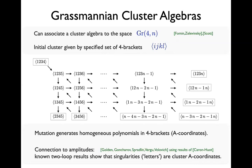It's non-trivial that they're polynomials, because you remember there's a denominator in the mutation definition. But in the Grassmannian, these Plücker variables satisfy Plücker identities — quadratic relations arising from anti-symmetrizing on five labels with only four-component objects. Using those relations, you can always cancel the denominator, so you only ever get polynomials in minors, never rational functions. These cluster A-coordinates were connected to N=4 amplitudes by looking at known two-loop results whose symbol letters were all of the form of these cluster A-coordinates.